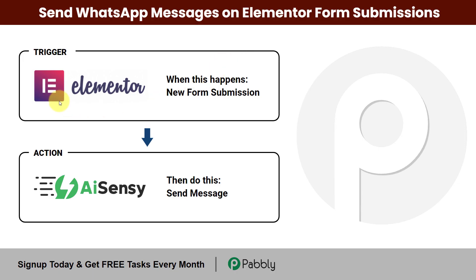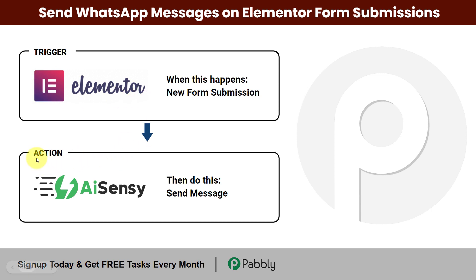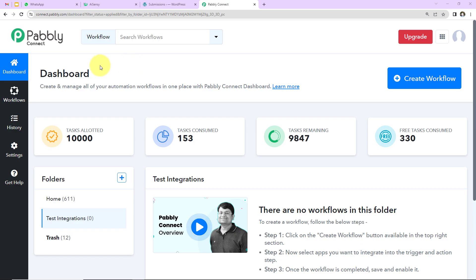To do this, we will have to integrate Elementor Forms with WhatsApp by AiSensy, and we can do the same using Pabbly Connect. Your trigger will be Elementor and your action application will be WhatsApp by AiSensy. Let's begin to understand how you can integrate and automate this process.